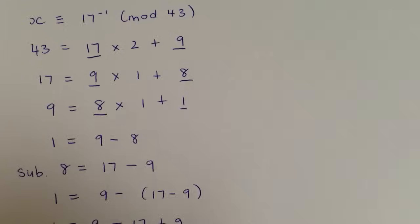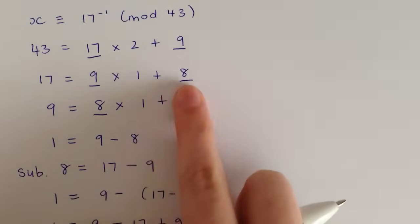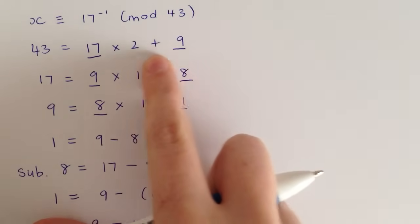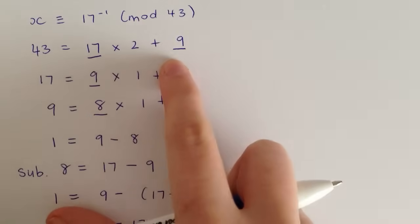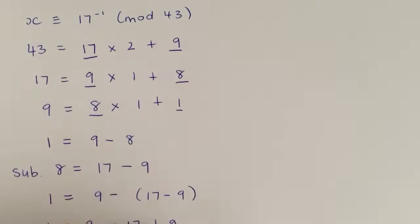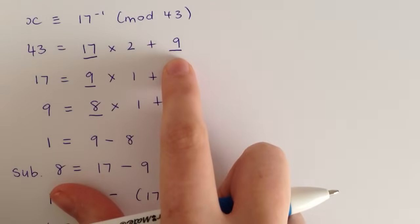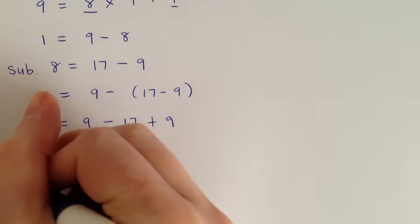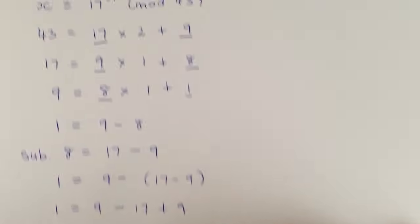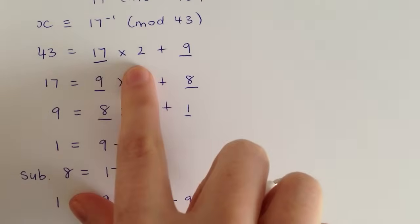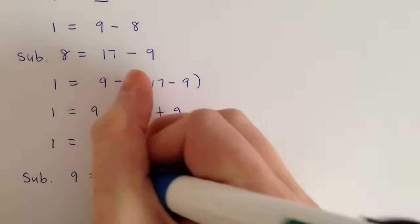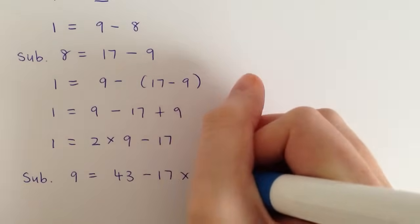So now we've already subbed in here this equation. We want to go back up the Euclidean algorithm and use this one instead. So we want to sub that into what we've just done. Again, we want it in terms of this 9 here. So that'll make it sub 9 equals, take this 17 times 2 over the other side, so we get 43 minus 17 times 2.